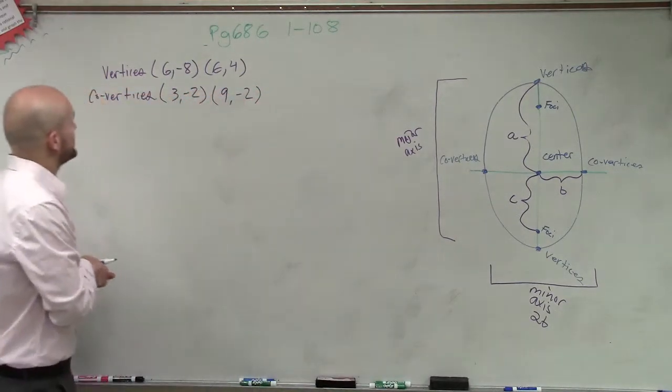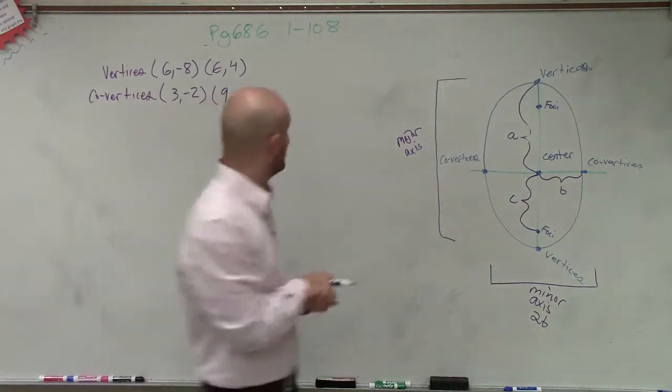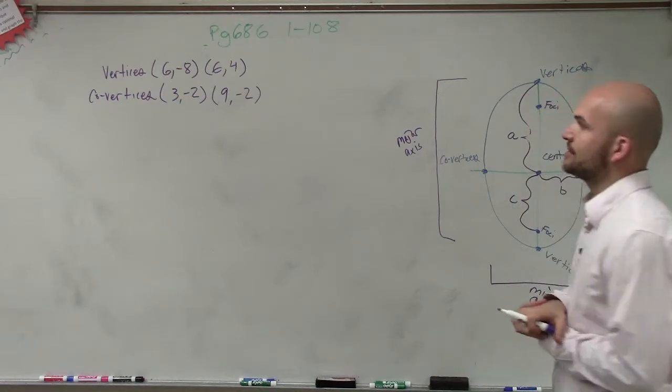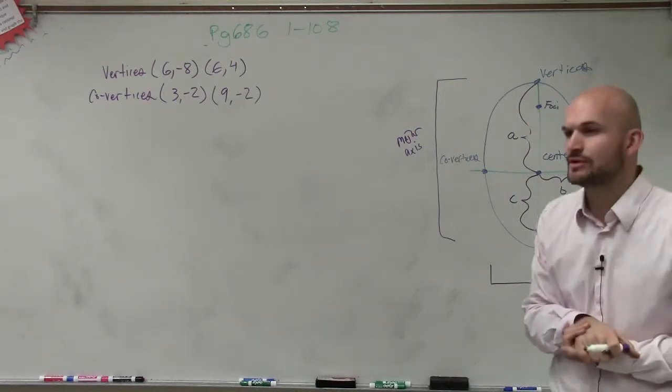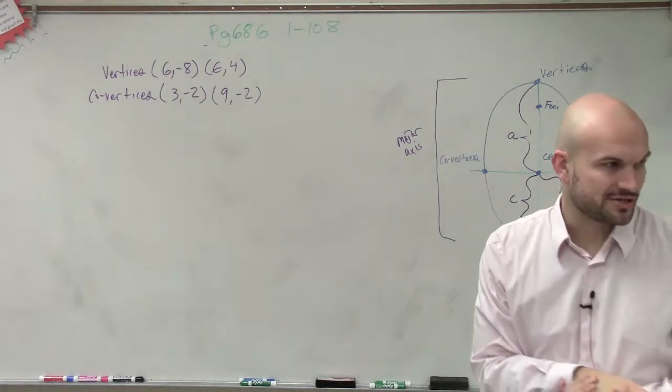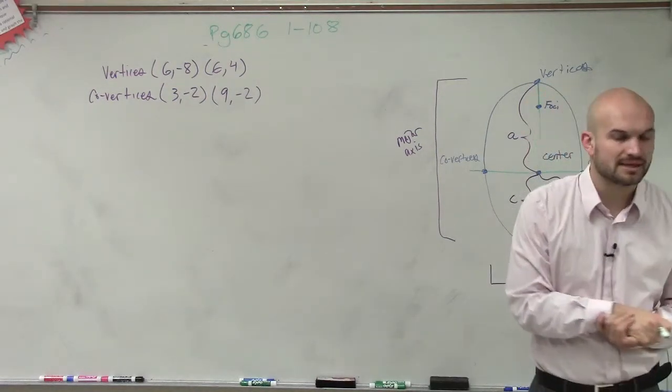So in this example, they're giving us the vertices at (6, -8) and (6, 4). Then they're giving us covertices at (3, -2) and (9, -2). And they're asking us to write the equation of the ellipse.